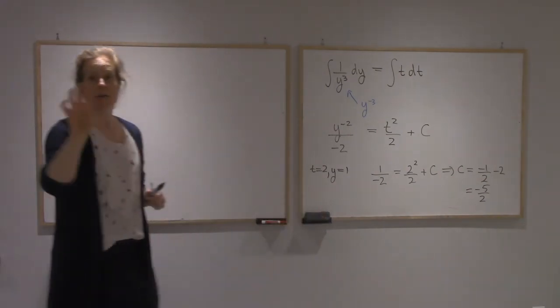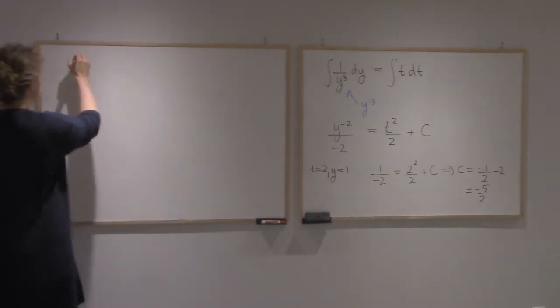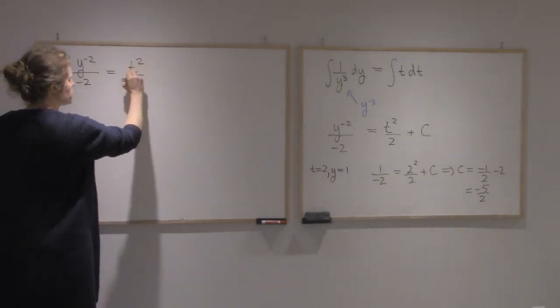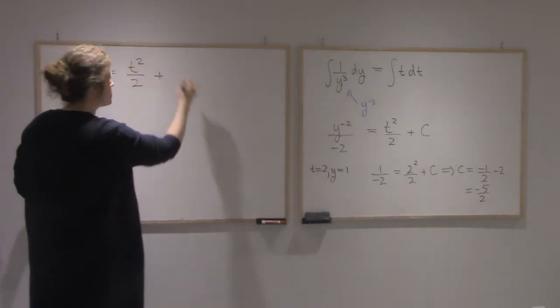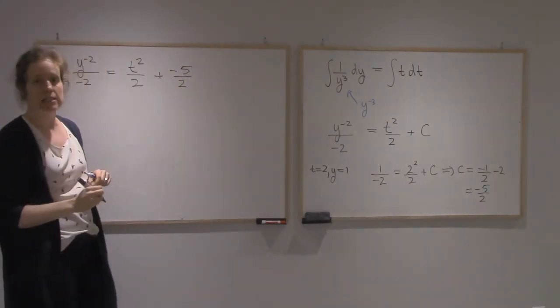Alright, I'm going to take that value of C minus 5 halves. I'm going to put it inside the C. So I get y to the minus 2 over minus 2 equals t squared over 2. And C we said was minus 5 halves. And now I'm going to isolate y.